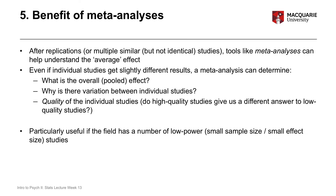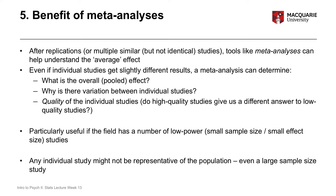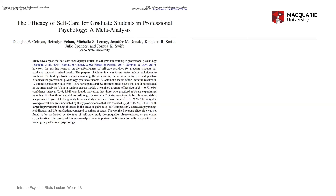If individual studies are not powered to find significant results — if the sample sizes are too small to get statistically significant results — then using a meta-analysis is a really good approach to see what the individual studies put together are telling us. They can even help with large sample size studies, because any individual study still might not be representative of a general population. You heard about this in your week 12 lecture, but I want to give you another example here.